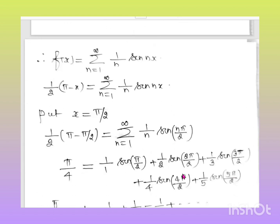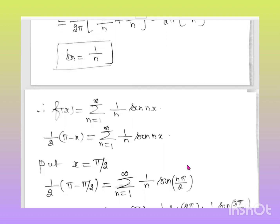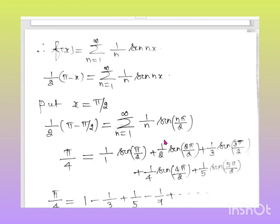Substituting into the Fourier series with a₀ = aₙ = 0 and bₙ = 1/n: f(x) = ½(π - x) = Σ (1/n) sin nx. To deduce the series, take x = π/2, because sin(π/2) = 1 gives useful non-zero values.